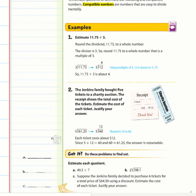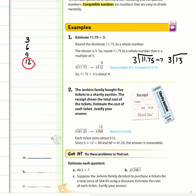Thinking about numbers compatible with 3: 3, 6, 9, 12. Since 11.75 is pretty close to 12, I'll estimate that number as 12. So instead of 11.75 ÷ 3, I do 12 ÷ 3 = 4. So 11.75 ÷ 3 is about 4.